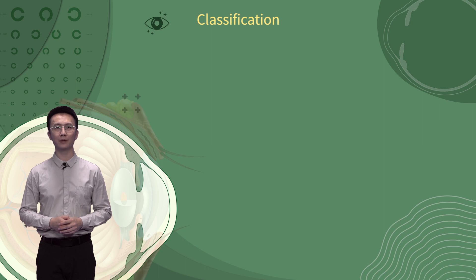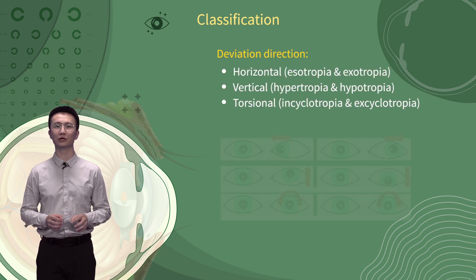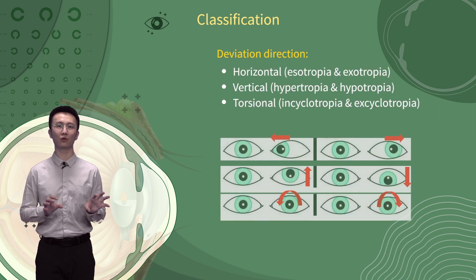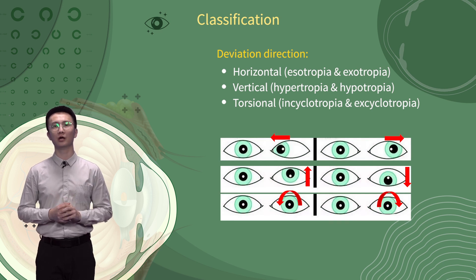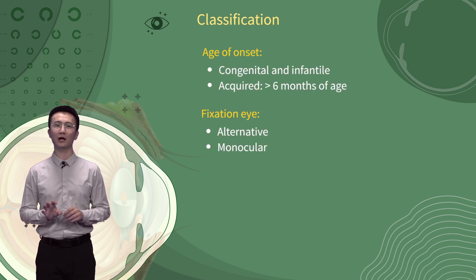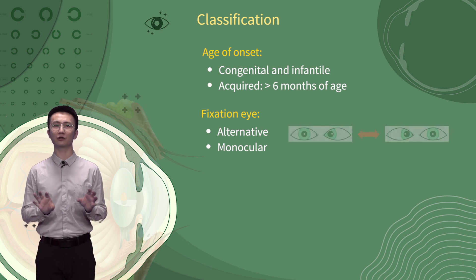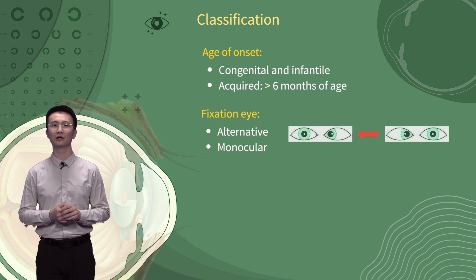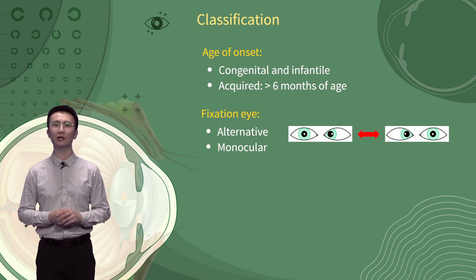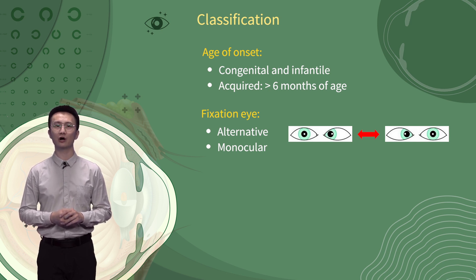The misalignment may be in any direction: inward, outward, up, down, or torsional. If the fixing eye and the deviating eye can alternatively switch, we have alternating strabismus, which allows the visual development of both eyes. Otherwise, monocular strabismus is a common cause of amblyopia.